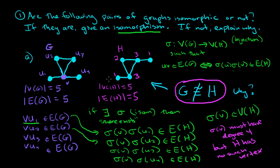We're going to see this general idea with a bit more rigor later, and we'll prove that when you have an isomorphism, a vertex of a particular degree has to map to a vertex of the same degree. We'll prove that a little bit later on.